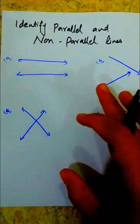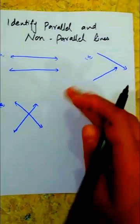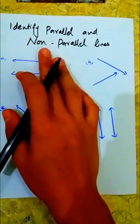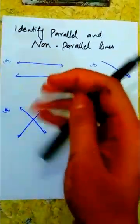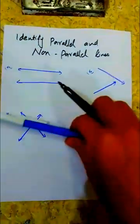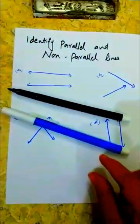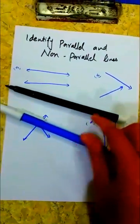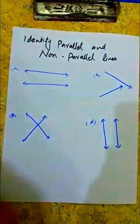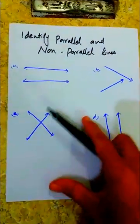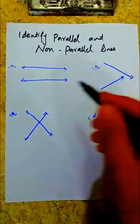We have to identify the parallel lines and the non-parallel lines. Parallel lines are the ones that go in the same direction. If I keep them going the same way, these are the parallel lines. And the non-parallel lines are the ones that don't go in the same way.